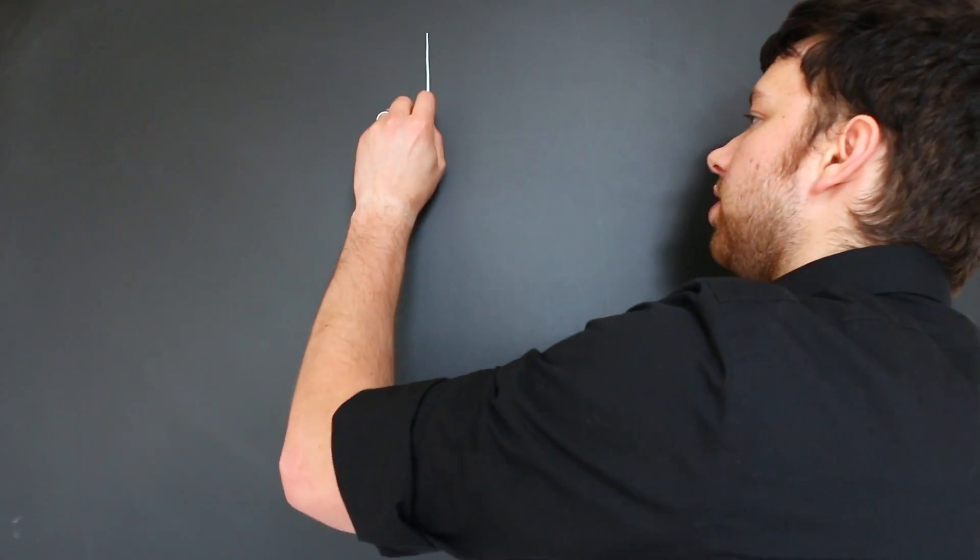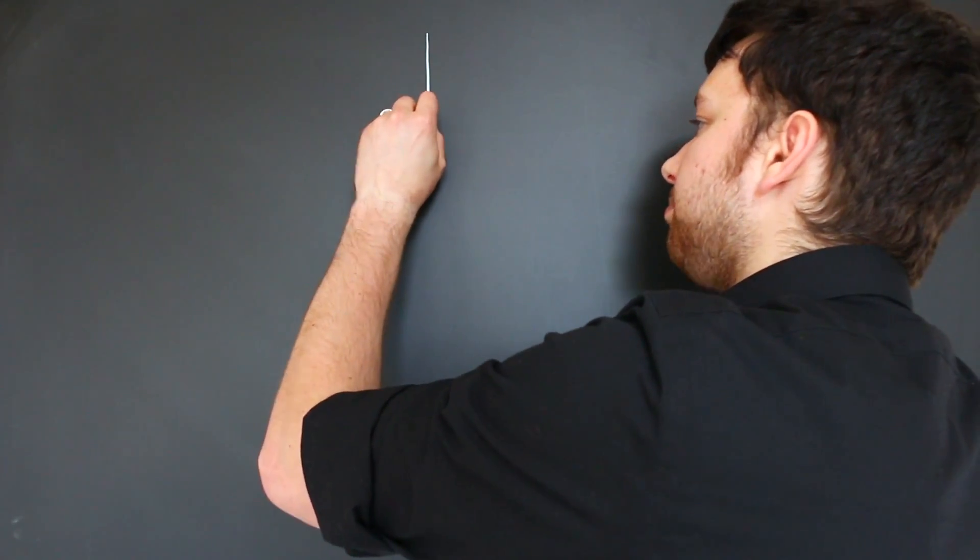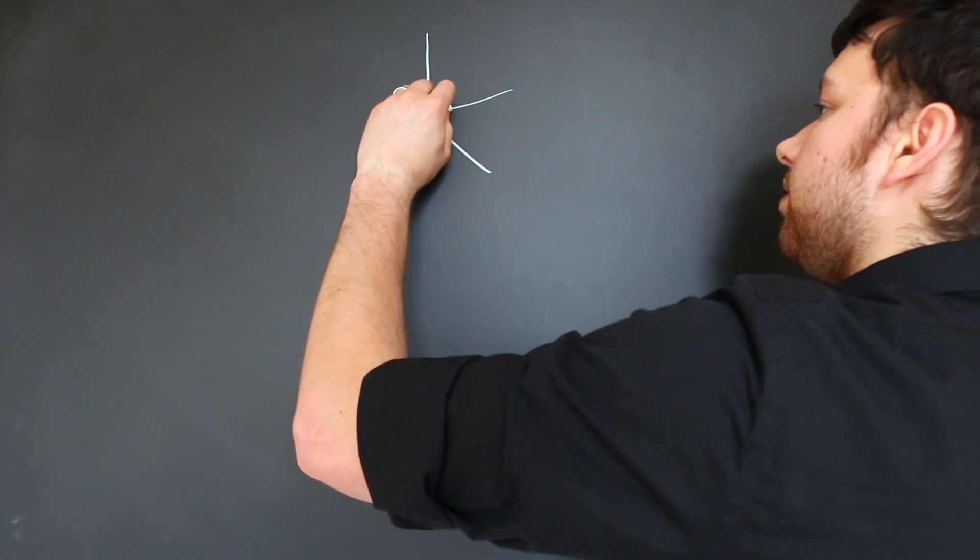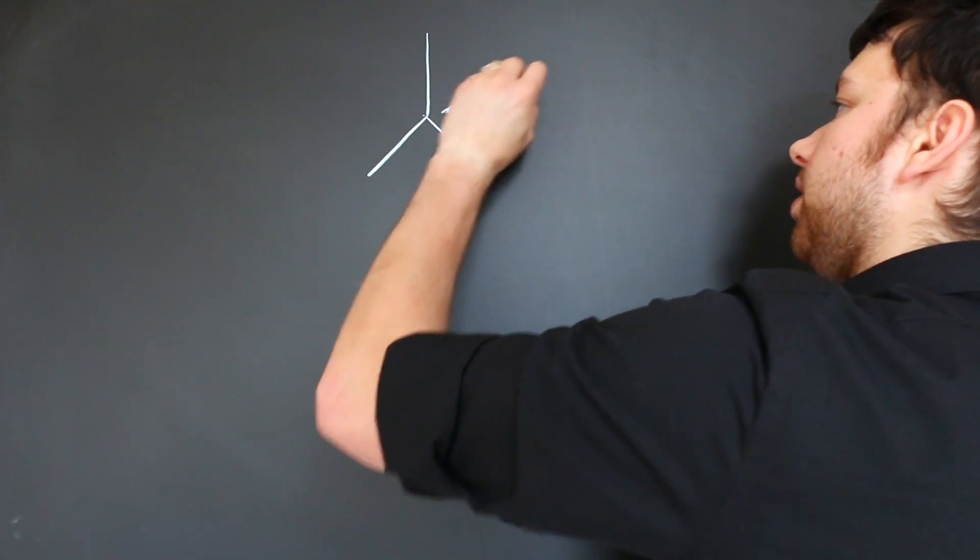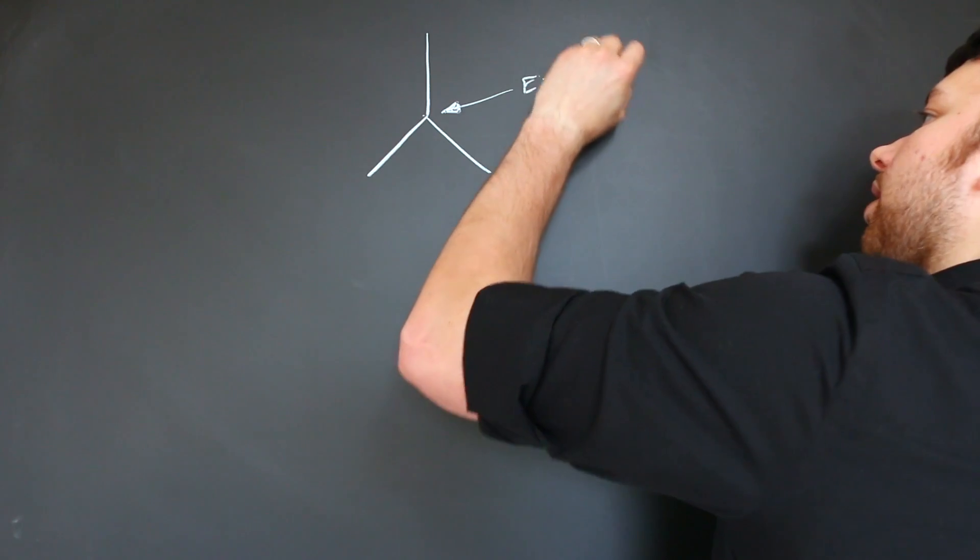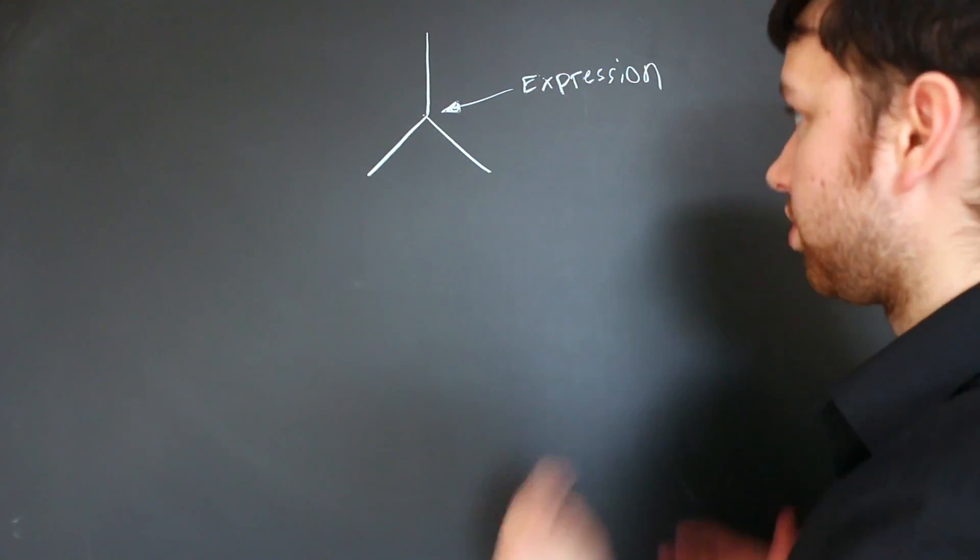Specifically, we're going to be talking about branching. Essentially what branching is, is when a program splits based on something. So right here, this branching point, we're going to put an expression. And I think I told you guys this, but if I didn't, I'll just go over it one more time.